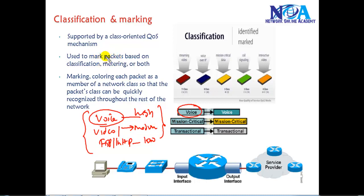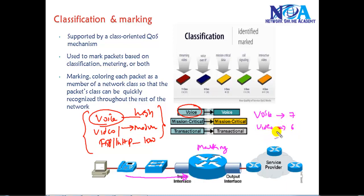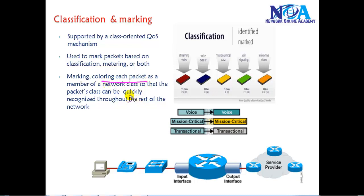After classification, as packets move over the network we can apply specific marking values to them. For example, all voice traffic can be marked with a value of seven, and video traffic can be marked with a value of six. As packets go through the network, once they reach the next device, the marking value is used to decide what priority to give that traffic. Marking is like coloring the packets as members of a specific network class, and it will be recognized throughout the network. Classification differentiates traffic like video, voice, mission-critical data, or signaling traffic.